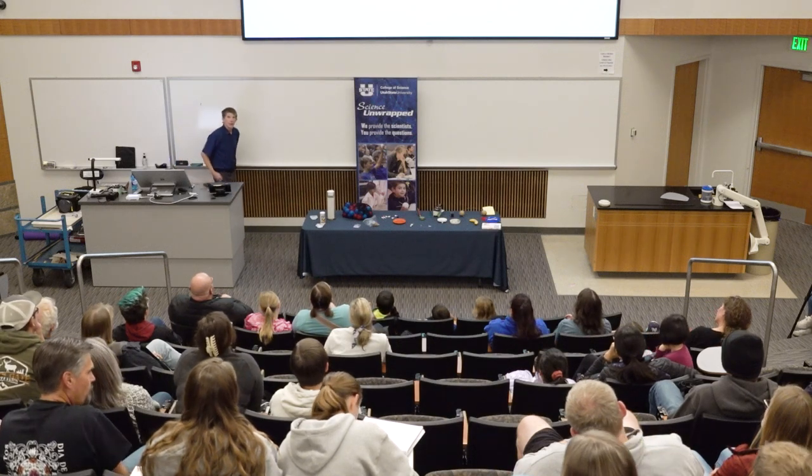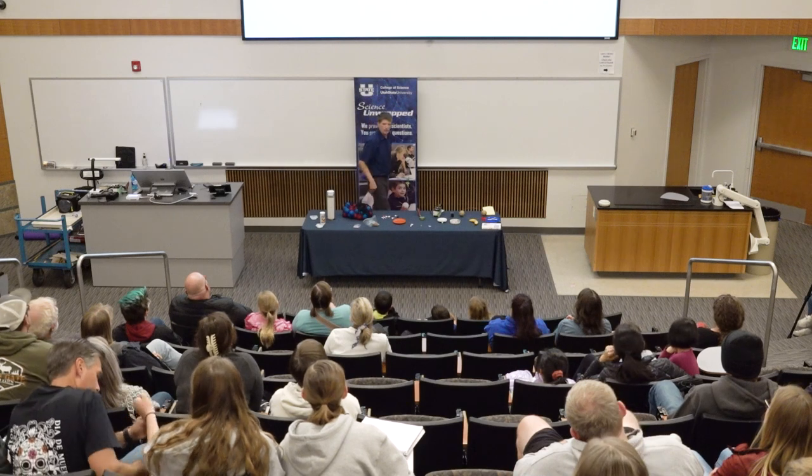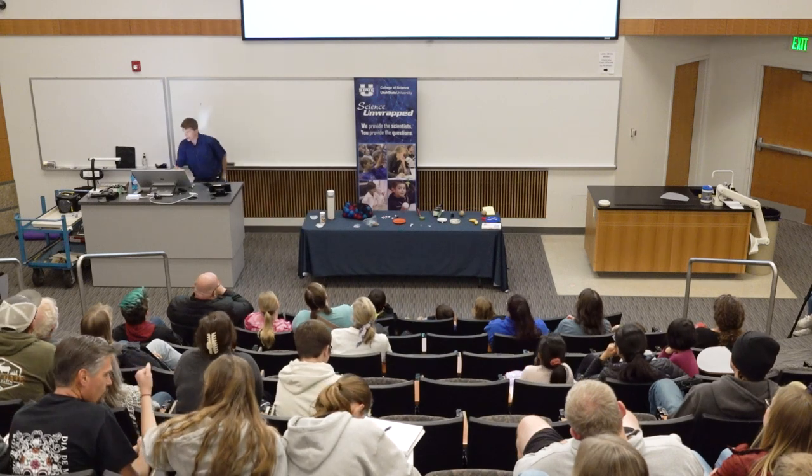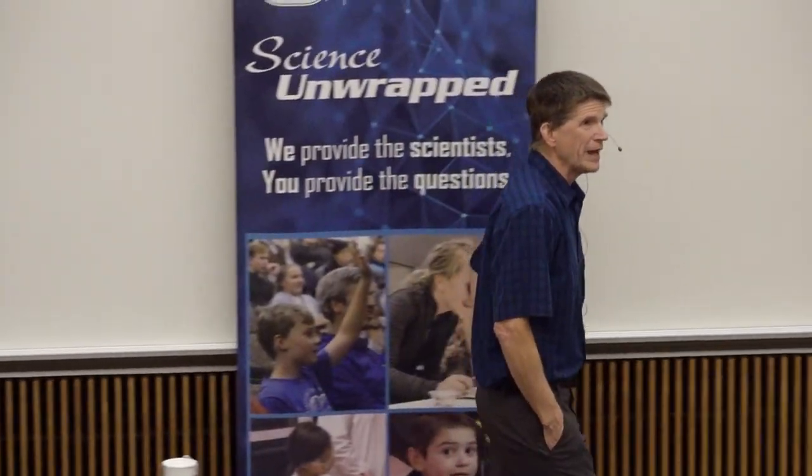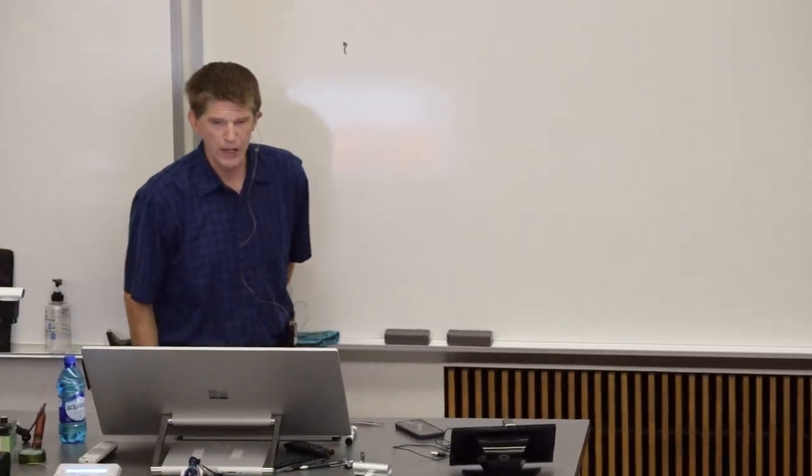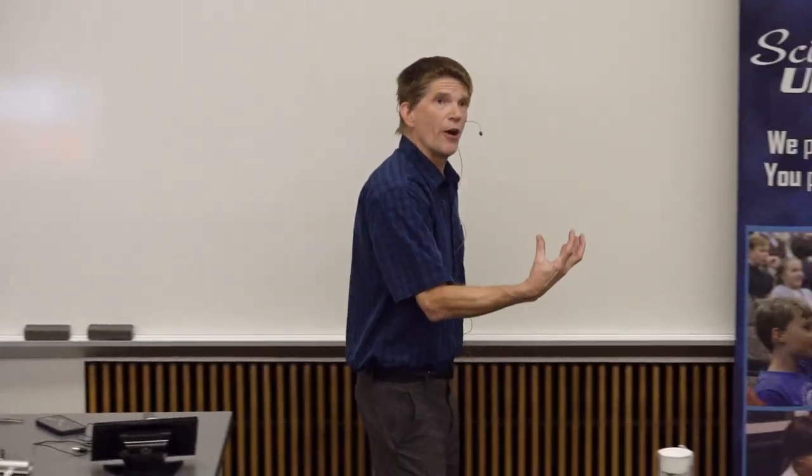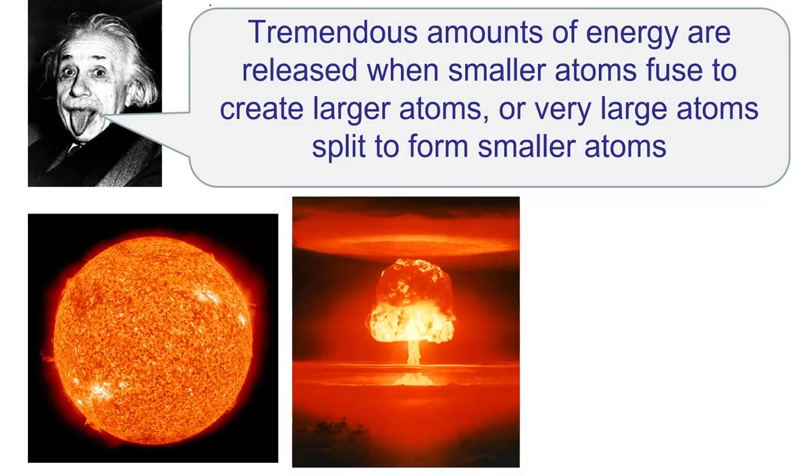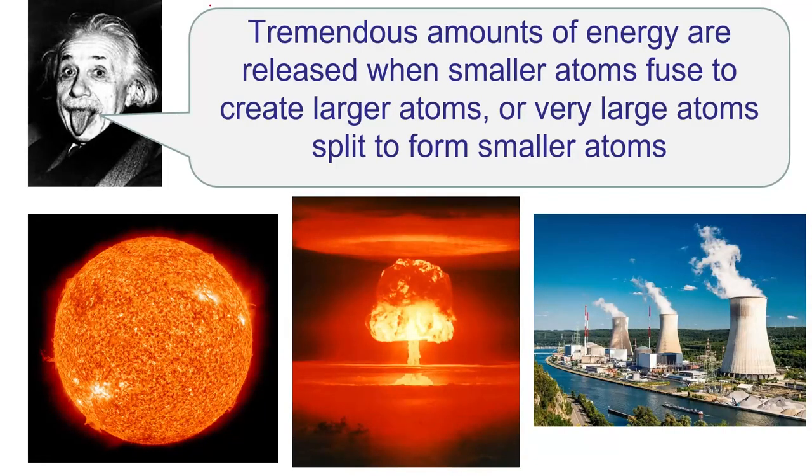Tremendous amounts of energy are released when smaller atoms in stars fuse to create larger atoms, and also when large atoms split to form small atoms, which is what we're going to be discussing in a few moments here in the context of radioactivity. So the reason I put Einstein up there, and believe it or not, that's an actual real picture of Einstein. He stuck his tongue out for the picture because he was kind of a funny guy actually. But he discovered that energy and matter are interrelated by the equation E equals MC squared. So when these fusion reactions occur in stars such as our sun, they release tremendous amounts of energy. And that's all the sunlight we get to warm our bodies and to perform things like photosynthesis.